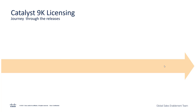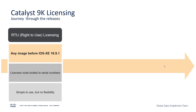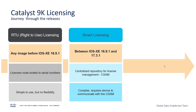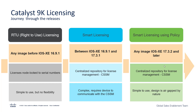Let us look at the licensing journey that we have taken since release. Initially when the Cat9k family was introduced we used the right to use licensing or RTU licensing. The licenses were node locked to the serial numbers. The advantage was it was very simple to use but there was absolutely no flexibility. With 16.9.1 and up to 17.3.1 we used smart licensing on our Cat9k products, using a centralized repository for license management — the CSSM. The drawback of smart licensing however is that it was too complex and required a learning curve. Taking customer feedback into consideration, with 17.3.2 and later we introduced smart licensing using policy.